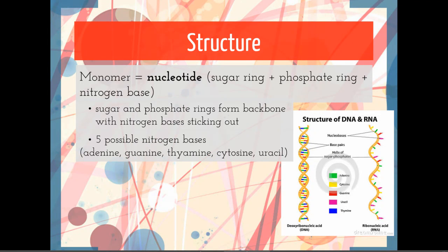The sugar ring and the phosphate ring is the same for every nucleotide, but there are five possible nitrogen bases, so those can vary: adenine, guanine, thymine, cytosine, and uracil. They're often referred to just by their first letter as A, G, T, C, and U.